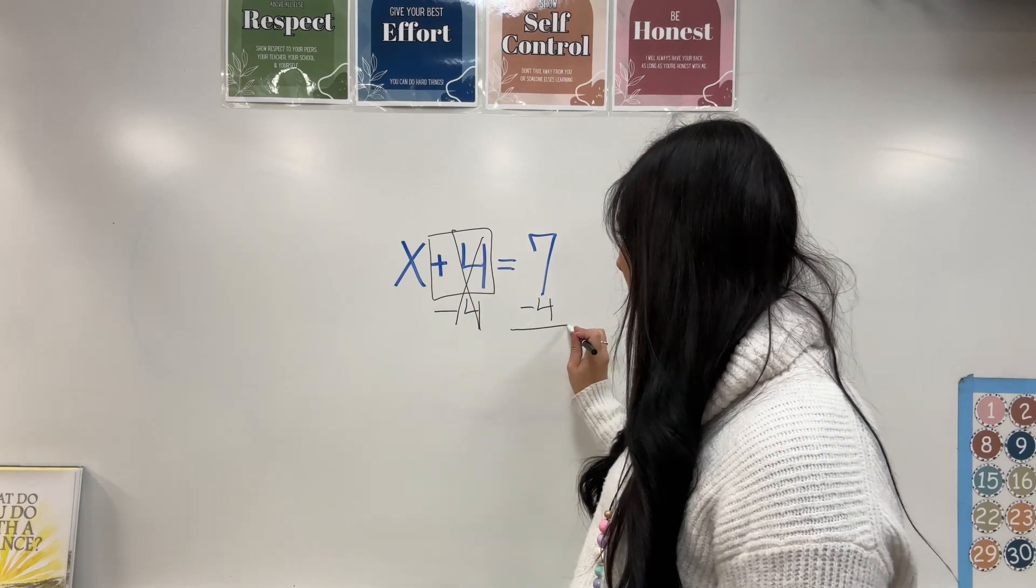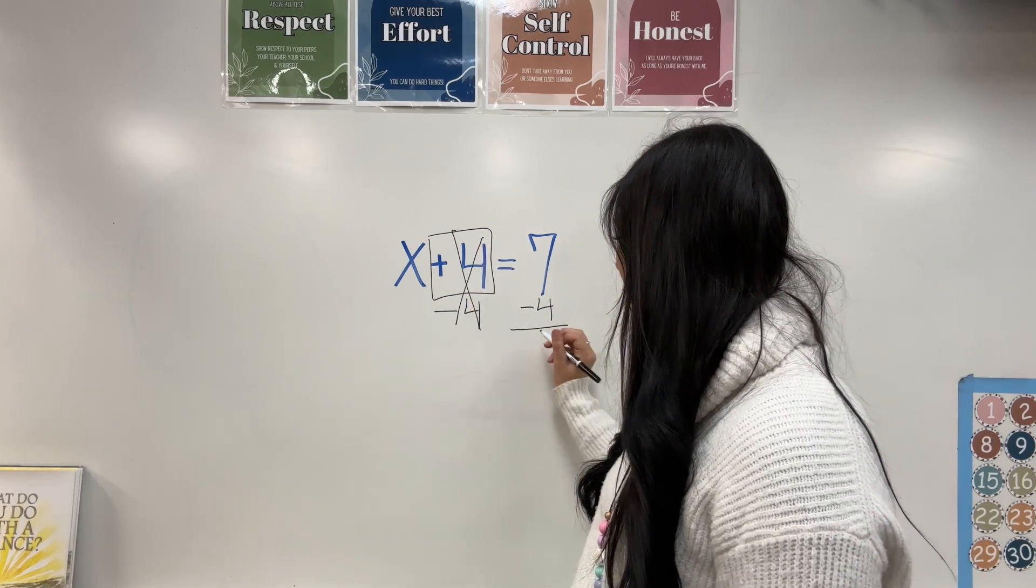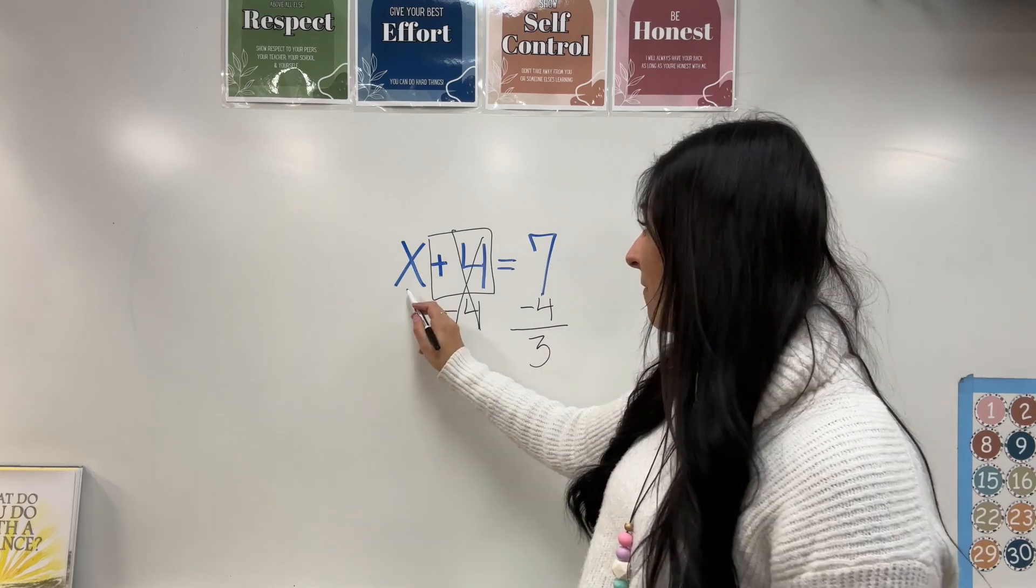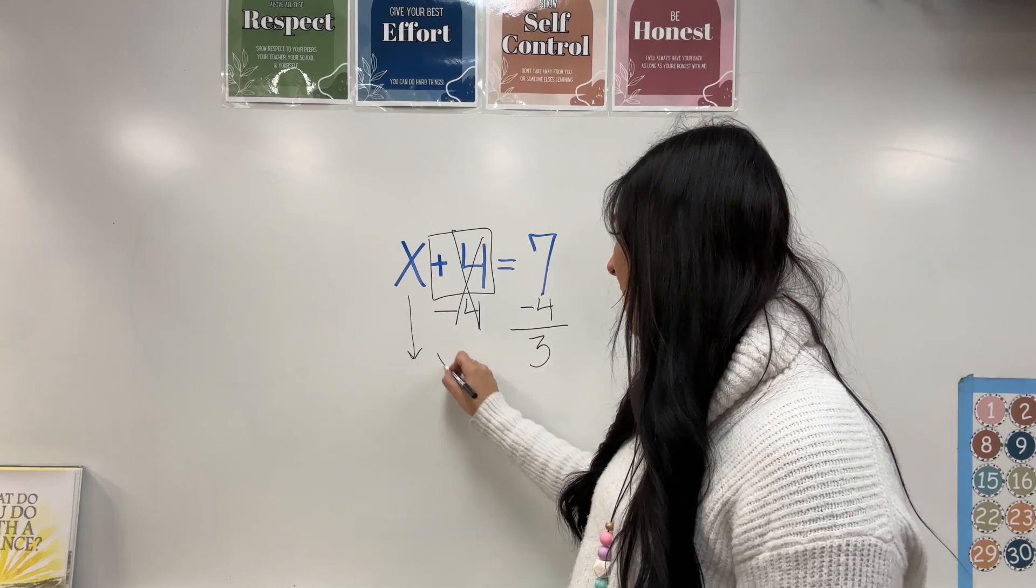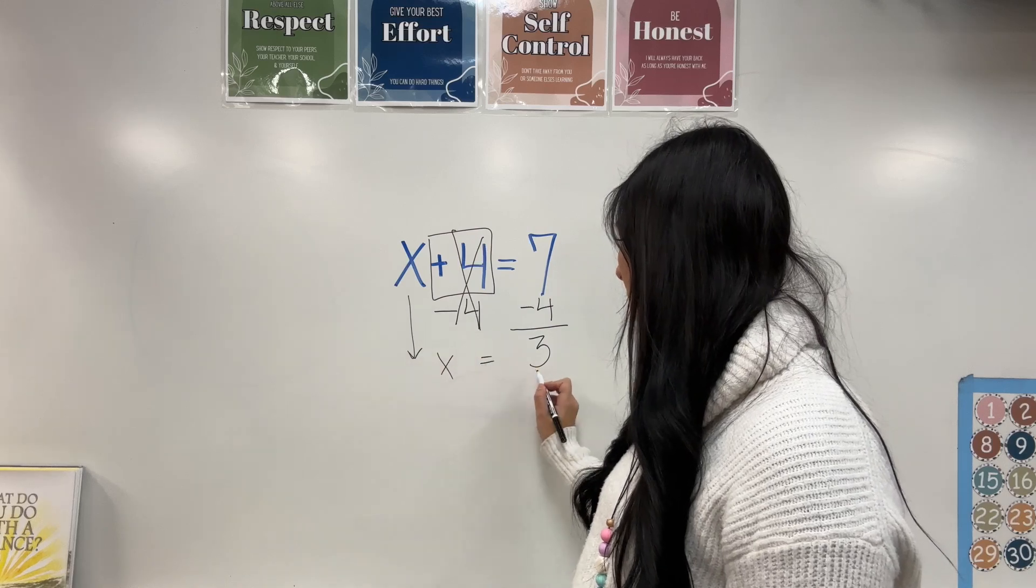Now this is just able to cancel out. This one, we actually solve for seven take away four equals three. I finally got x all by itself. So that means x equals three.